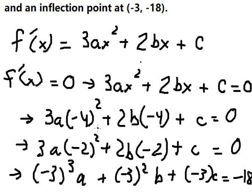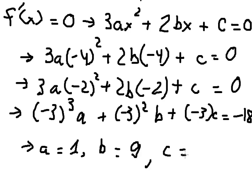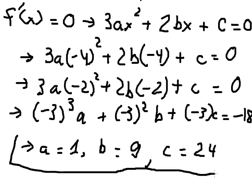After creating three equations, we can set up a system of equations and find the solution for a, b, and c. The solution is: a = 1, b = 9, and c = 24. This is the final answer.